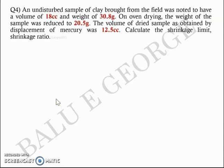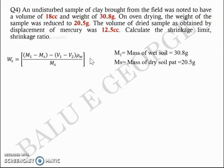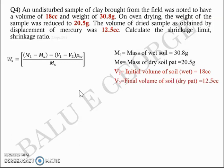The equation for shrinkage limit is: SL = (m1 - ms - (v1 - v2) × ρw) / ms, where m1 is the mass of wet soil = 30.8 grams, ms is the mass of the dry pad after oven drying = 20.5 grams, v1 is the initial volume of the wet soil = 18 cc, v2 is the final volume obtained by mercury displacement = 12.5 cc, and ρw = 1 gram per cc, keeping a consistent unit system of grams and cc.